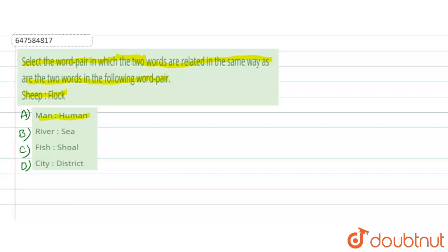We have given: man and human, river and sea, fish and shoal, city and district.